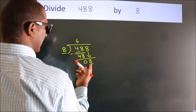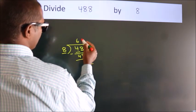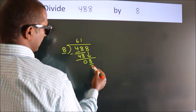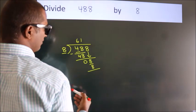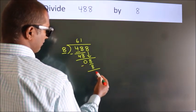When do we get 8? In the 8 table. 8 times 1 is 8. Now we subtract. We get 0.